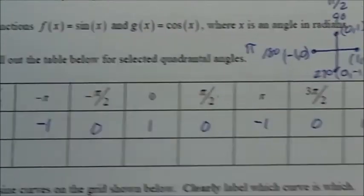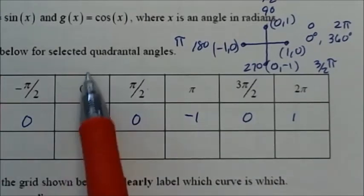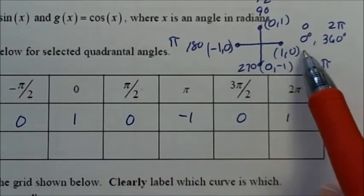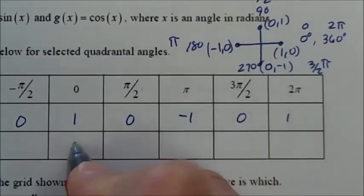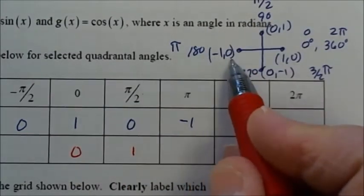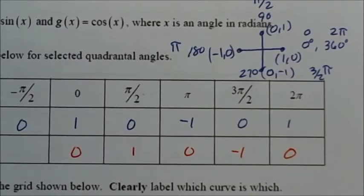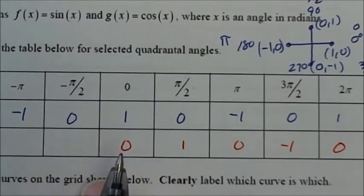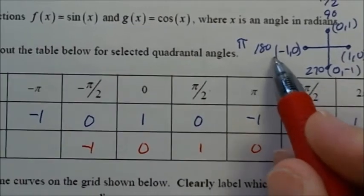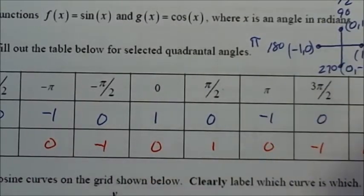Taking the red pen to complete the table for sine. Sine is the y-coordinate on the unit circle. Starting at 0 radians going right: sin(0) = 0, sin(π/2) = 1, sin(π) = 0, sin(3π/2) = −1, sin(2π) = 0. Filling in to the left: sin(−π/2) = −1, sin(−π) = 0, sin(−3π/2) = 1, sin(−2π) = 0.